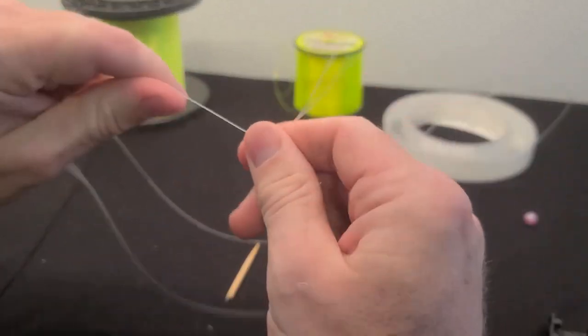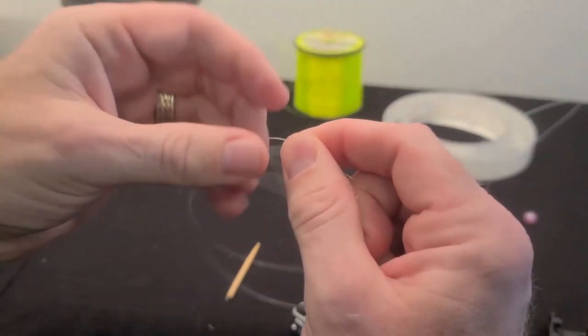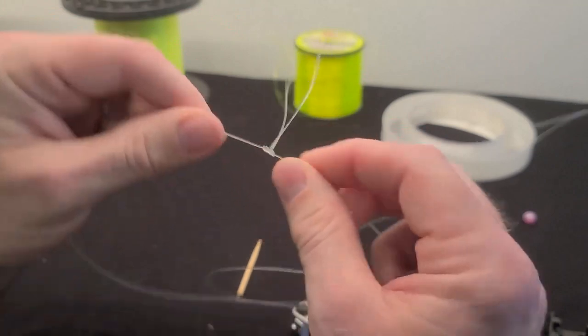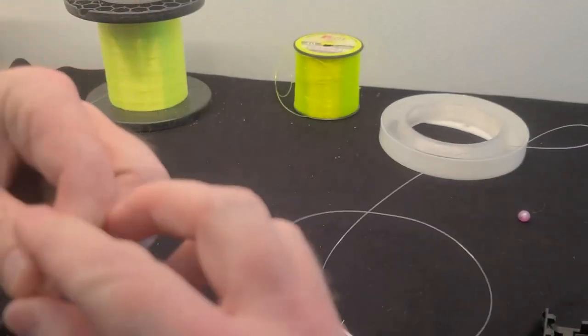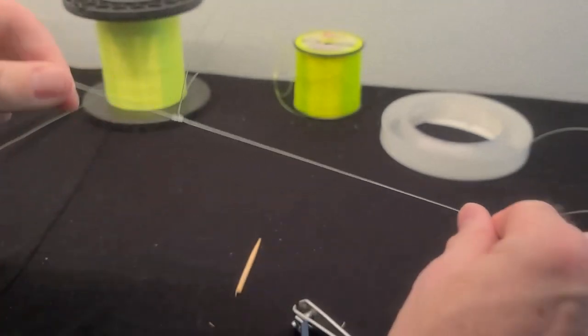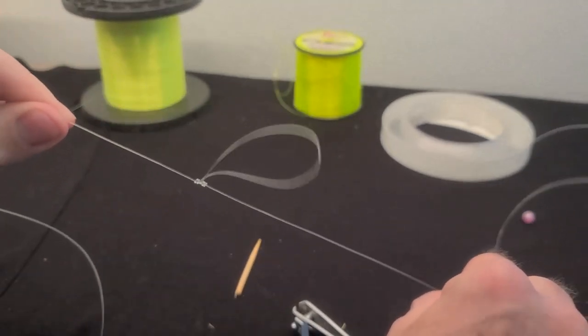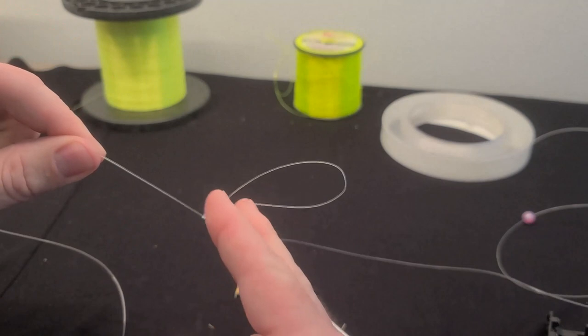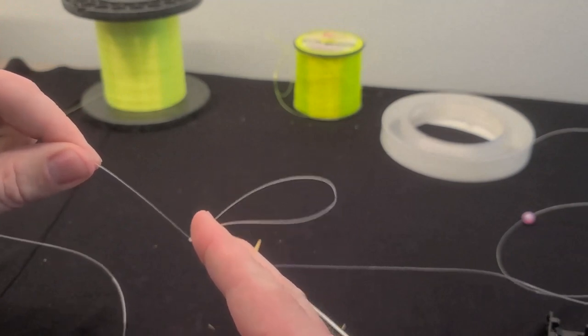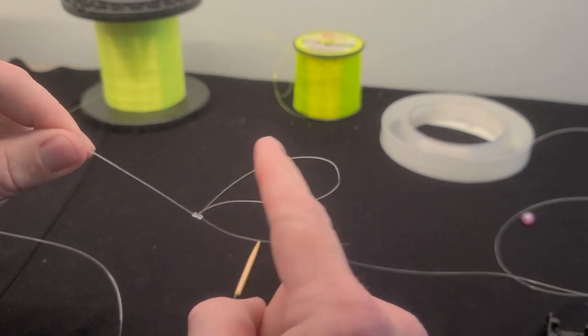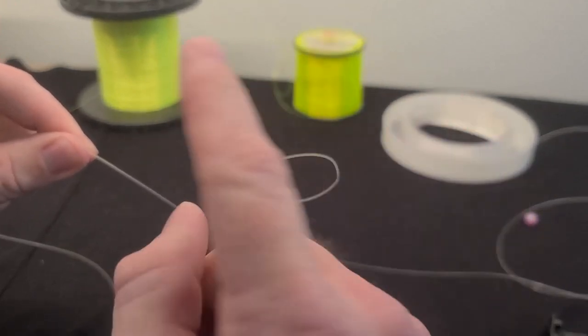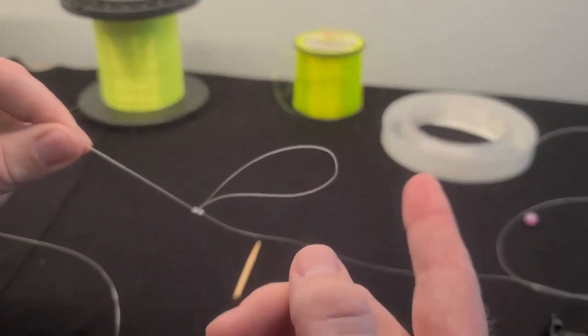And when we do that, we get a nice tight knot on both sides of this loop. So here's the first section of your rig where your hook is gonna be. So some people cut this off, I do not do that.